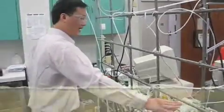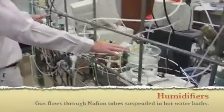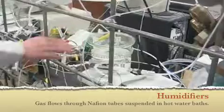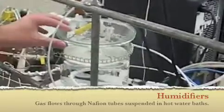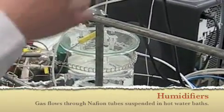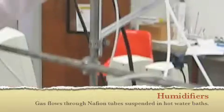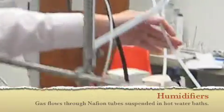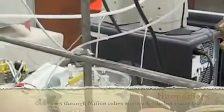So this is the anode side. This is the cathode side. The anode is from the gas hydrogen from channel 2 and flows through this tube to the humidifier.